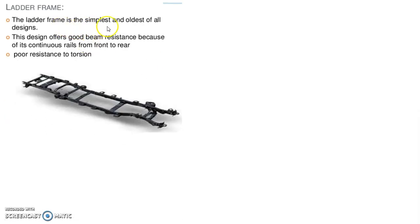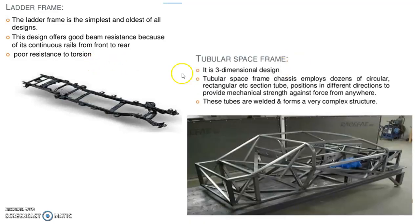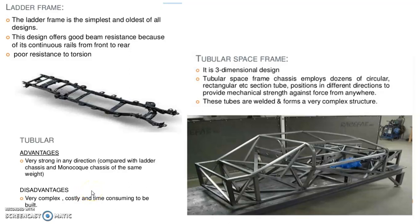Ladder frame: The ladder frame is the simplest and oldest of all designs. This design offers good beam resistance because of its continuous rails from front to rear, but it has poor resistance to torsion. Tubular space frame: It is a three-dimensional design. The tubular space frame chassis employs dozens of circular, rectangular and other section tubes positioned in different directions to provide mechanical strength against forces from any direction. These tubes are welded together to form a very complex structure. Its advantage is that it is very strong in any direction; the disadvantage is it is very complex, costly and time-consuming to build.